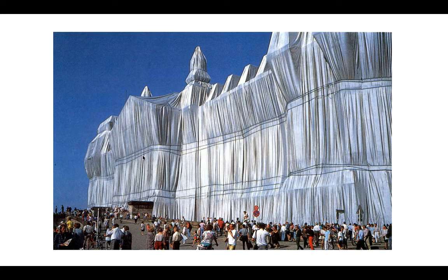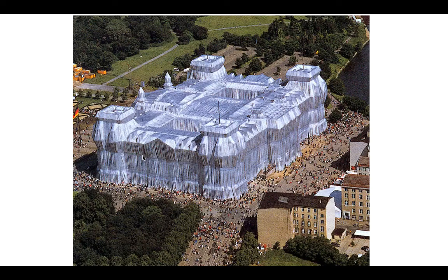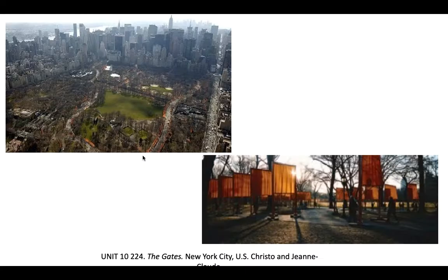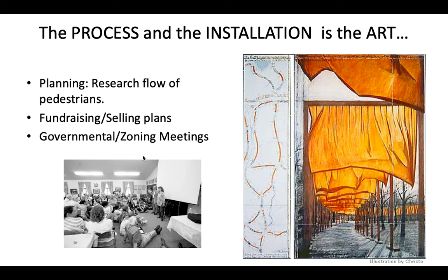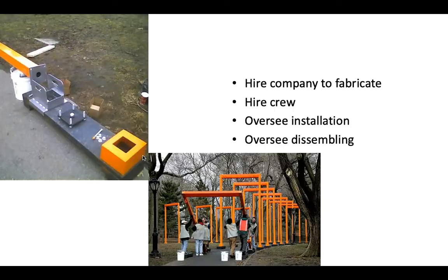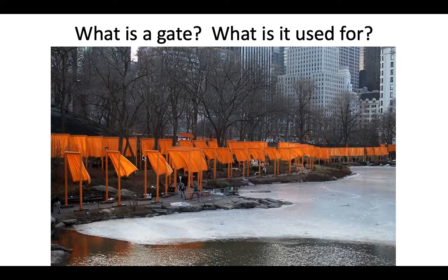He often wraps things — here he's wrapped a bridge and wrapped an entire government building in Germany. The piece in the 250 is the Gates in Central Park, New York City. He planned by looking at how pedestrians flow throughout the park, what paths people take, and which paths are most used. He would fundraise and sell the plans, go to governmental meetings, then hire crews to install and later dismantle the installation, overseeing the whole process.